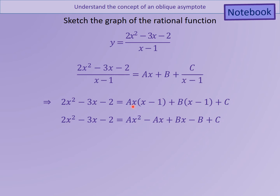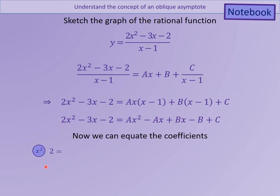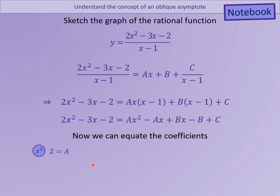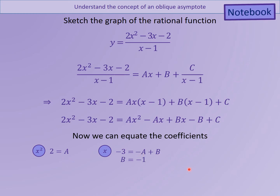So I'm comparing coefficients. I've expanded it. Looking at the x squared terms: I've got 2 on that side and a on that side, so a equals 2. Most of you would have spotted that straight away because 2x squared divided by x is the only way you're going to get that x value. Then looking at the x terms: I've got minus 3 there, and minus a plus b here. Since a equals 2, a bit of rearranging gets me b equals minus 1.